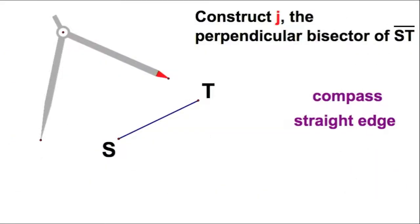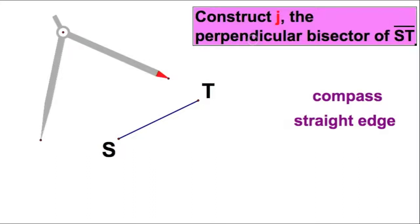This is our first classical construction. We are going to construct a line J, which will be the perpendicular bisector of our given segment ST.